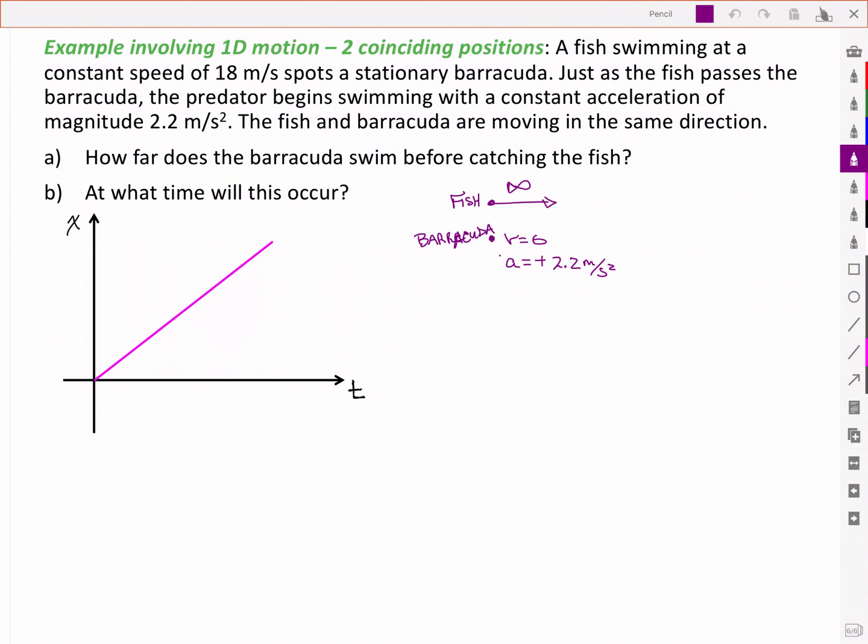The barracuda, on the other hand, is moving along with a constant acceleration. It's starting out with a velocity of zero, but it's going to build up velocity. So it starts out with a flat slope, zero velocity, and then builds up speed.